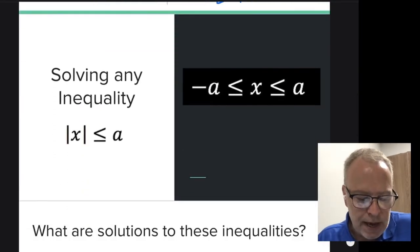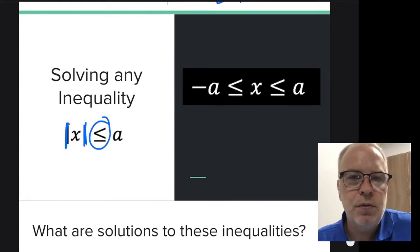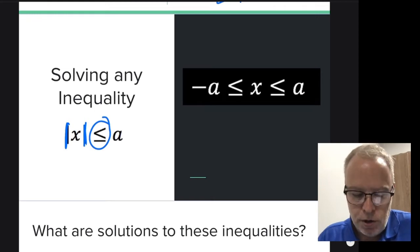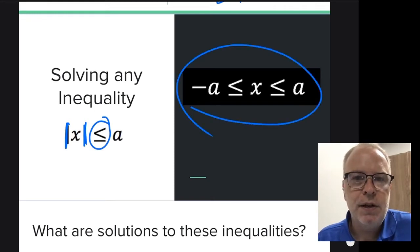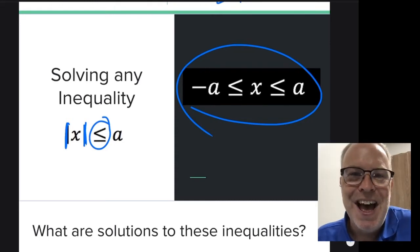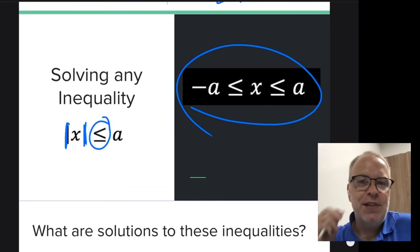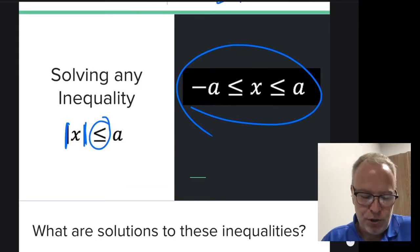See how that works. So solving any inequality with a less than symbol and an absolute value turns into a compound inequality or a between question. When it's a less than symbol and the absolute value, it's a between question.